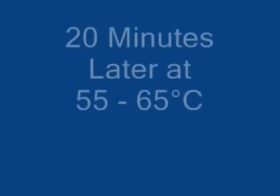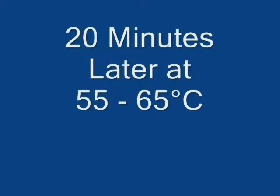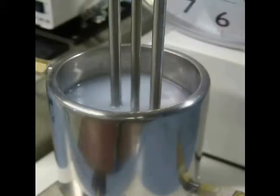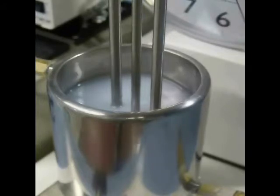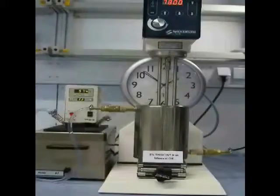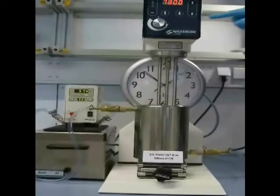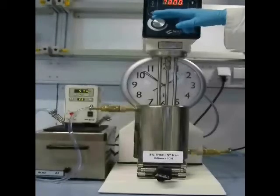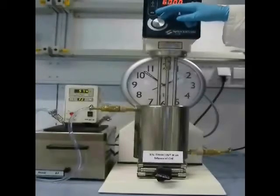After the Thixin-R has been added to the oil we need to continue to mix for about 20 minutes, ensuring that the temperature is maintained between 55 to 65 degrees Celsius throughout. The product may thicken slightly.